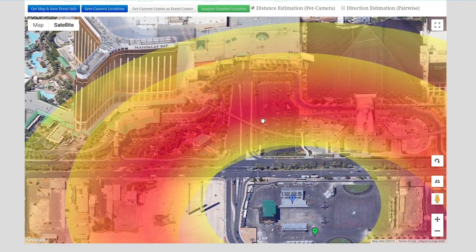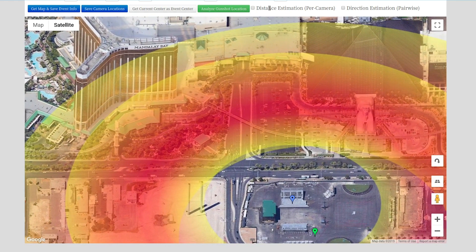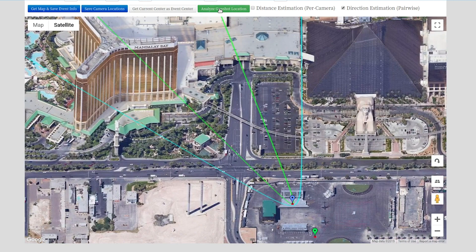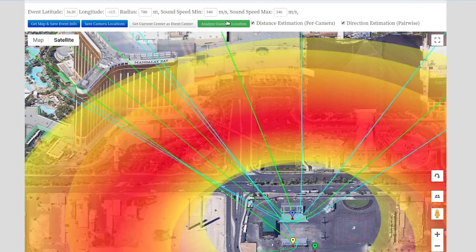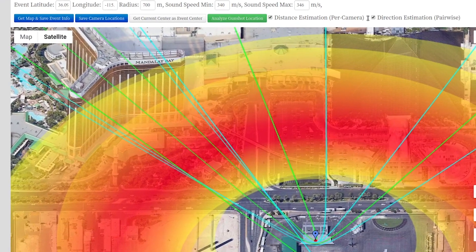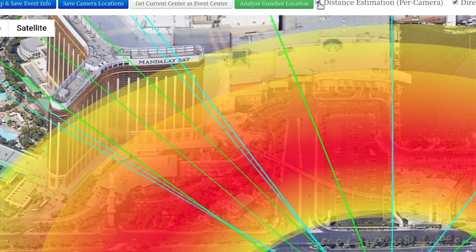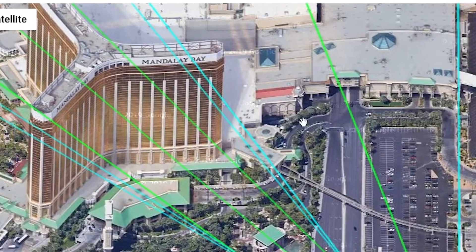When we have multiple cameras, we can not just tell how far away the shooter is, but we can also tell which direction by saying the sound, in this case just the muzzle blast, arrived at this camera first and then at this camera. Speed of sound is this and that means it came from that direction.